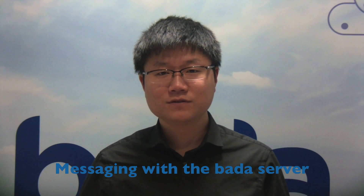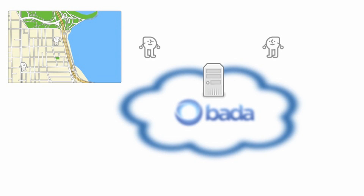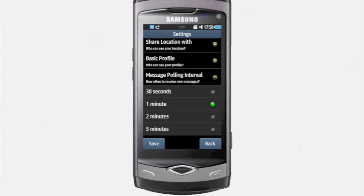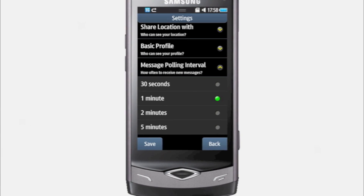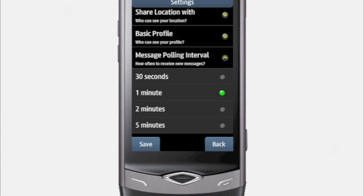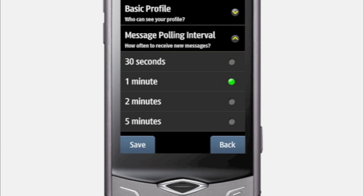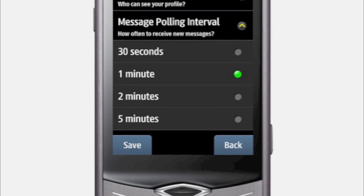We use the messaging service to send and receive messages using the Bada server. The Bada server handles message sending and receiving using a caching and polling mechanism. When you send a message to one of your buddies, the message will be cached on the Bada server until it is retrieved. It is stored there for a maximum length of time called the time to live. BuddyFix checks for messages at a set time interval, known as the polling interval. The shortest interval is 30 seconds, but the user can change this using the application settings, giving them more control over battery life.